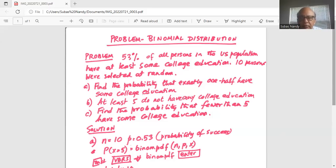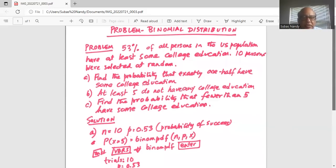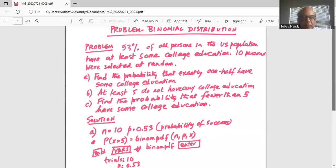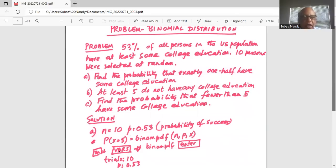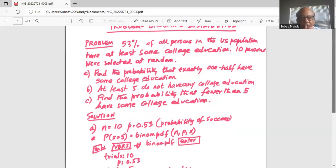So first we will work on part A. We know sample size n is equal to 10, probability of success is 0.53. And we have to find out exactly one half of 10, which is five, probability of x equal to five.